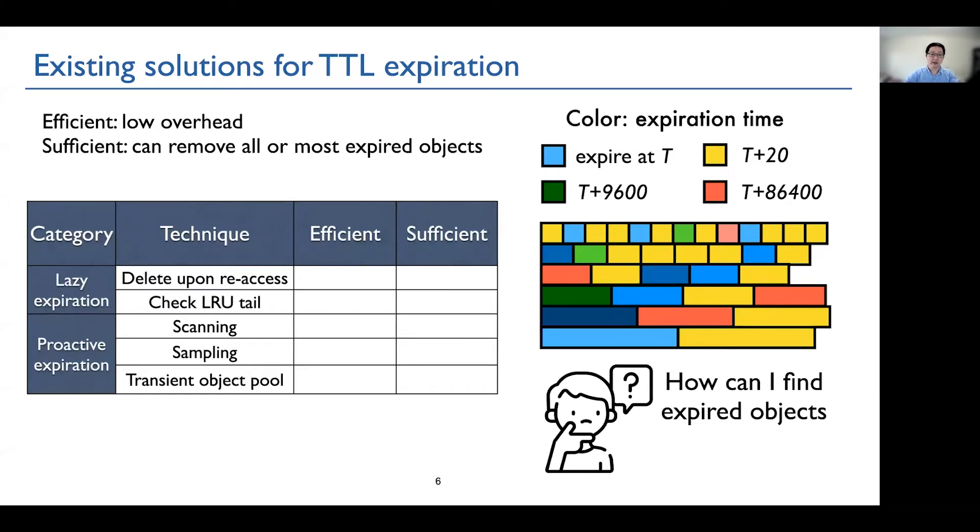We summarize existing techniques in the following table. We observe that these techniques fall into two categories. The first one is lazy expiration. The second one is proactive expiration. And we observe, we further observe that they are either not efficient or not sufficient. The details of comparison is in the paper.